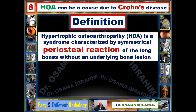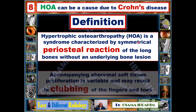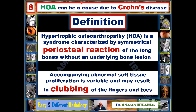First, the definition of HOA: hypertrophic osteoarthropathy is a syndrome characterized by symmetrical periosteal reaction. The main radiological issue is that the periosteal reaction is symmetrical in the long bones — not in the axial skeleton — and without an underlying bone lesion. Clinically, HOA is sometimes associated with clubbing of the fingers and toes, as well as abnormal soft tissue proliferation, particularly in the primary form.